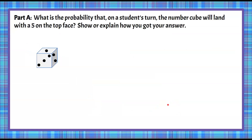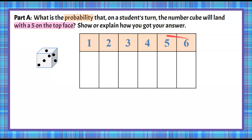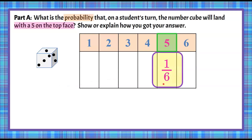Now we're ready for Part A. Part A asks: what is the probability that the number cube will land with a five on the top face? We're going to make an organized list. There are six outcomes when we roll the number cube, and we're focused on just a five happening. That is one out of six outcomes, so the probability is 1/6 of rolling a five.